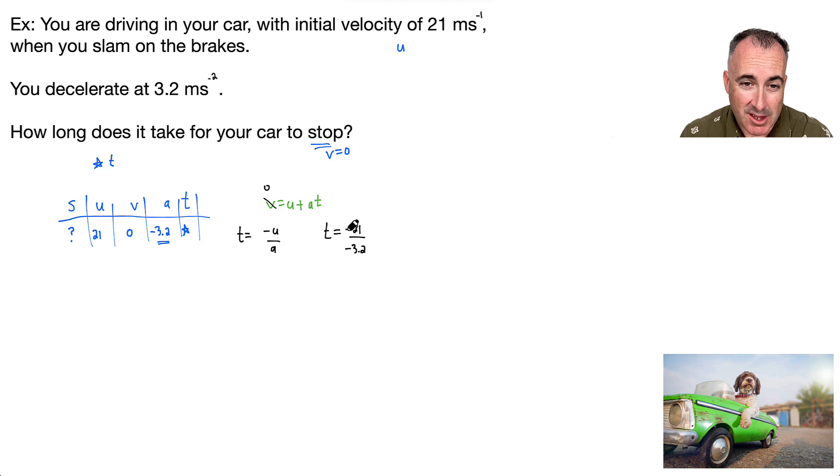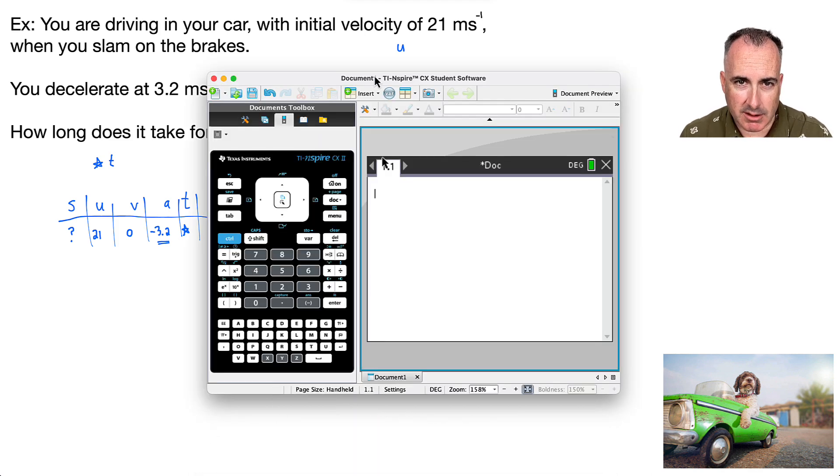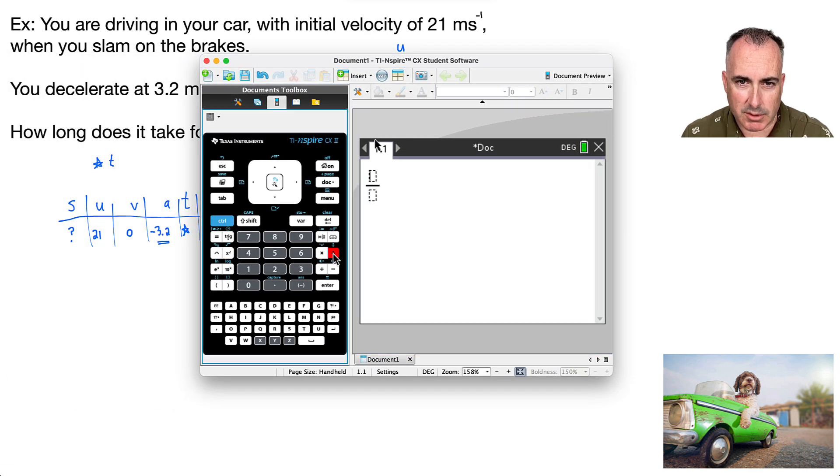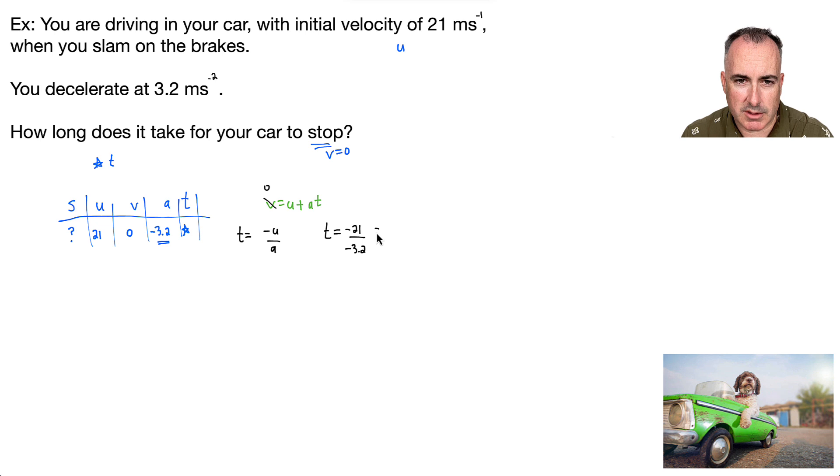I need my calculator. I need to do minus 21 over minus 3.2. And I get 6.5625. So that means it equals 6.5625. Now it's important to consider significant figures. They've given me two significant figures here and two here. So my answer should have two. So that means I should say 6.6 seconds. So that's going to be my time to stop.